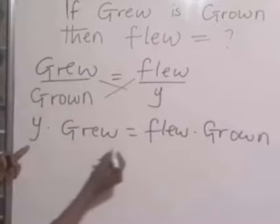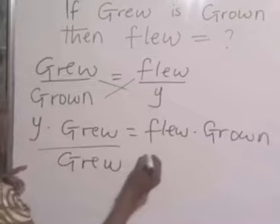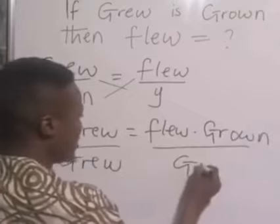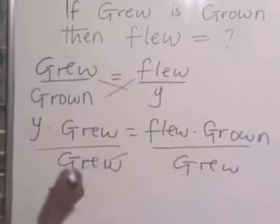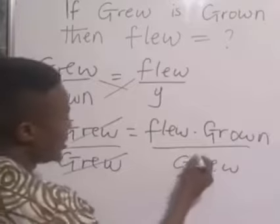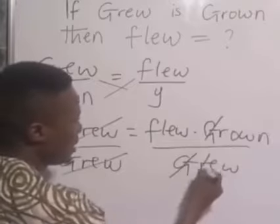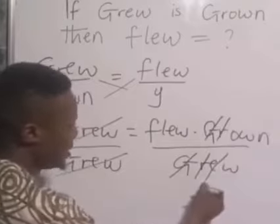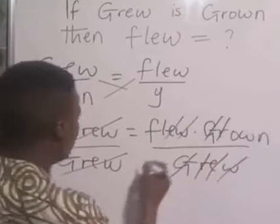To get your y, divide both sides by grew. Divide both sides by grew, so that grew will cancel grew. G will cancel g, r will cancel r, e will cancel e, w will cancel w.